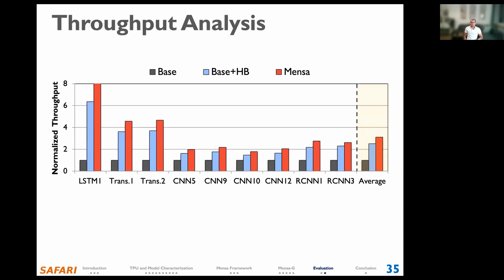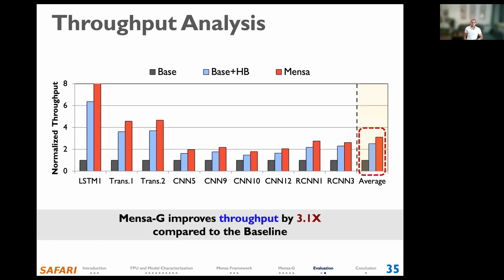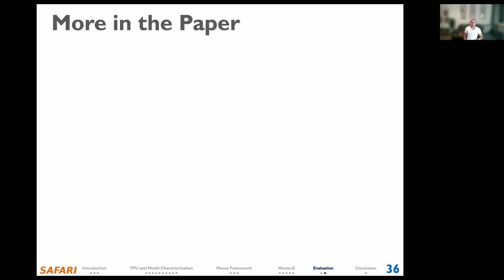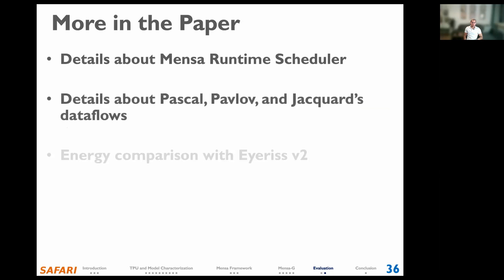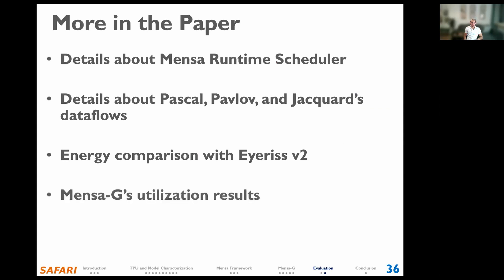We also analyze MENSA-G throughput compared to the baseline Edge TPU and baseline Edge TPU with high-bandwidth memory. We observe that MENSA-G improves throughput by 3.1x on average compared to the baseline Edge TPU. We invite you to check our paper for more details on MENSA-G's runtime scheduler, accelerator dataflows, comparison against prior state-of-the-art neural network accelerators, utilization results, and area results.